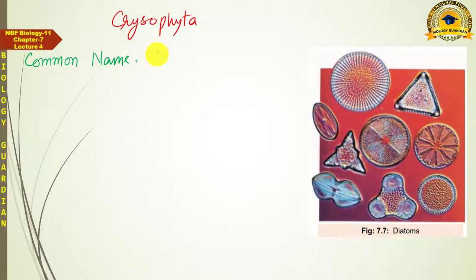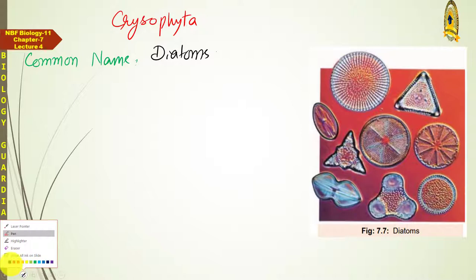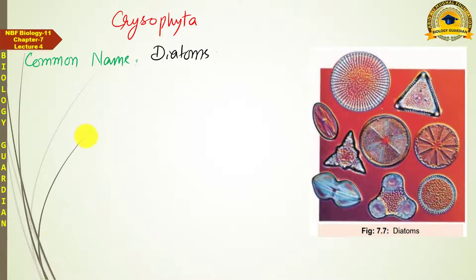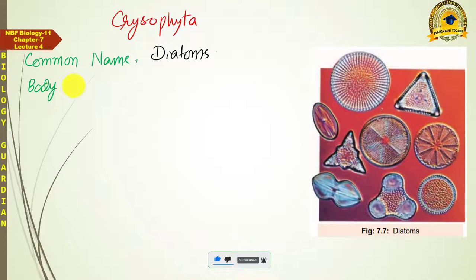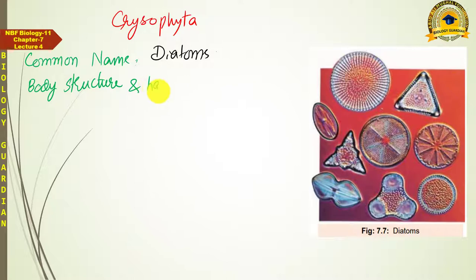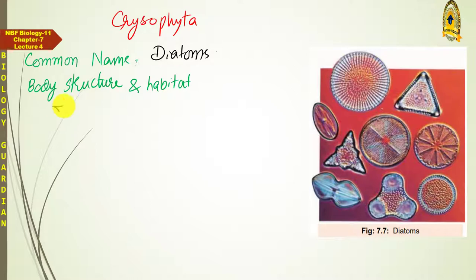Like the previous two groups — Euglenoids and Dinoflagellates — the body structure of Diatoms is also exclusively unicellular. Their habitat is both marine and freshwater, although all are aquatic. Their body structure is exclusively unicellular.